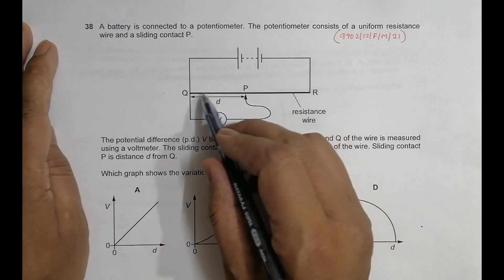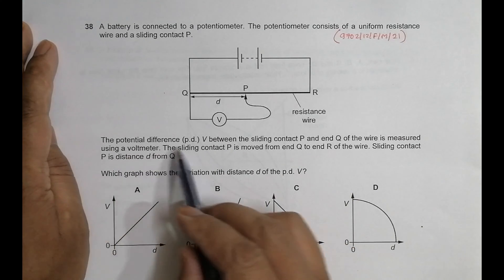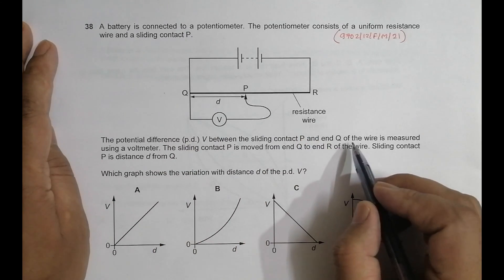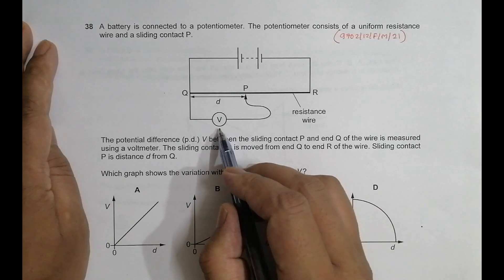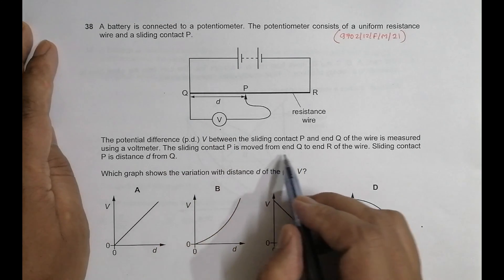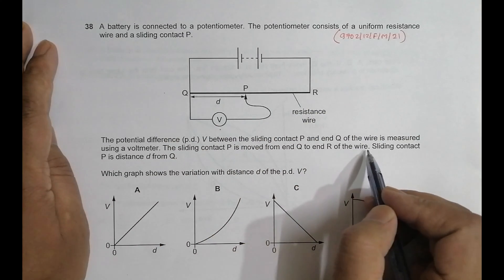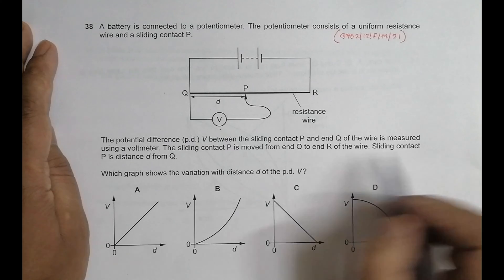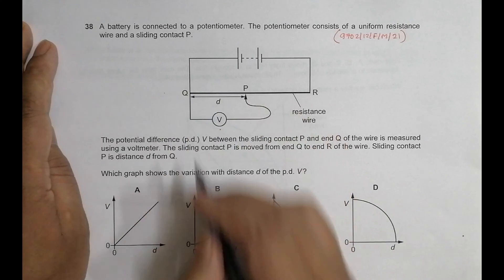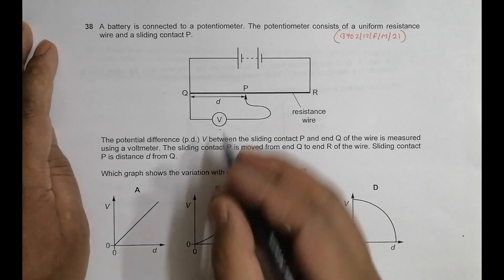The potential difference V between the sliding contact P and Q, so this length PQ of the wire is measured using a voltmeter. Using the approach of the potentiometer, the sliding contact P is moved from end Q, from here to end R of the wire. The contact is distance D from Q, so this is the distance from Q, from the left end, from the positive end of the source. Which graph shows the variation with distance D of the PD V?